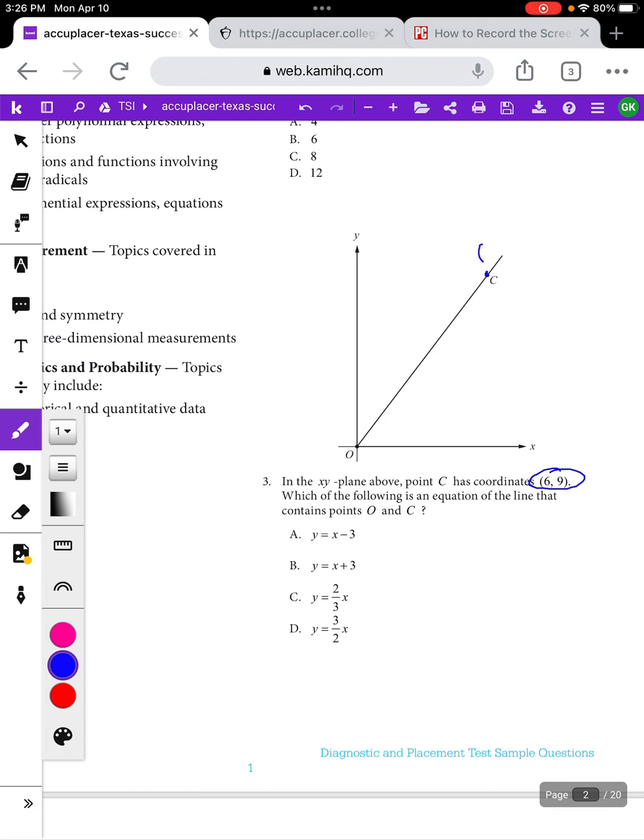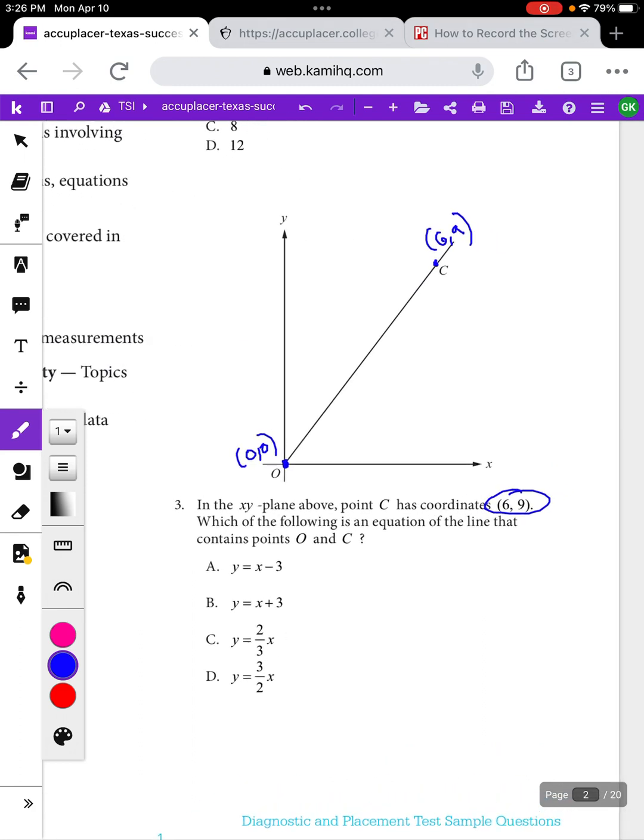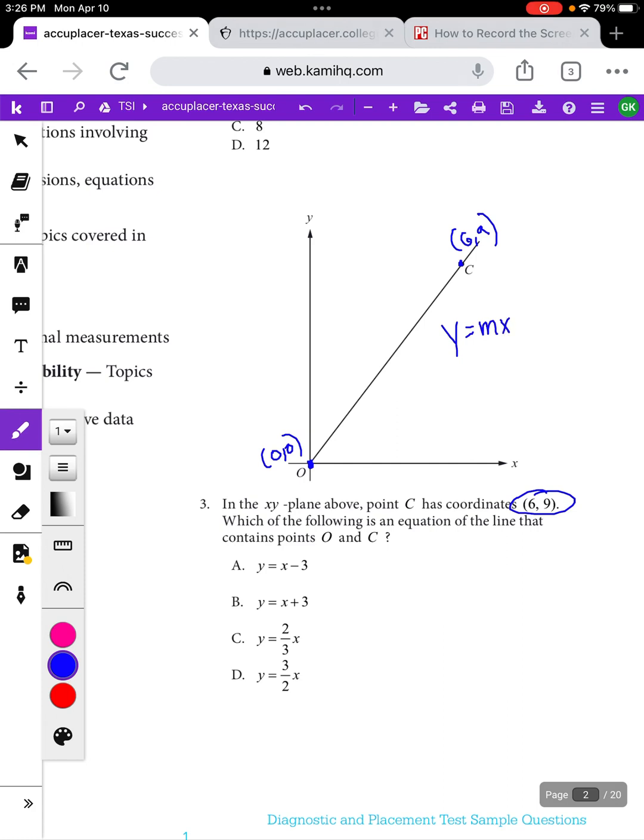We have the point C, which it tells us is at 6, 9, and we have this point O. Notice that point O is where the x and the y axis intersect. That's always going to be the origin, which is 0, 0. If we want to know which of the following is an equation for the line, the first thing to remember is that algebra 1 equation, y equals mx plus b, where m is the slope and b is the y intercept.